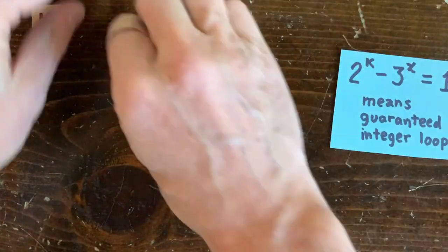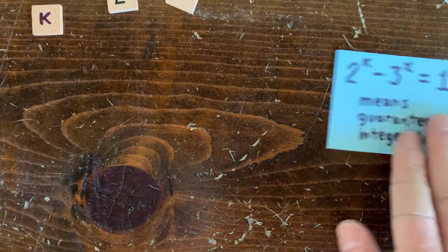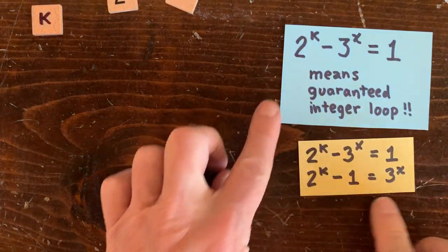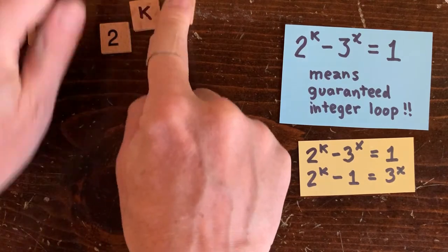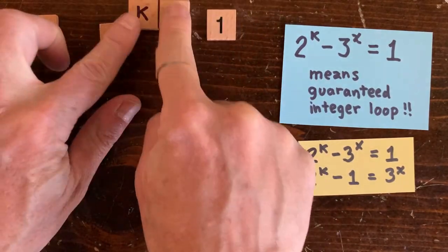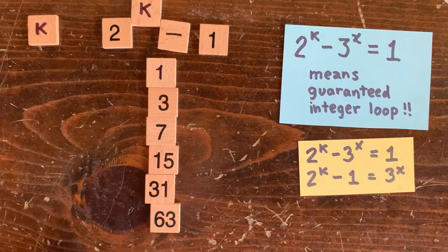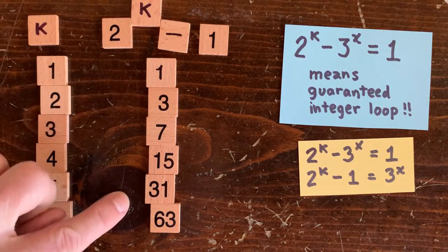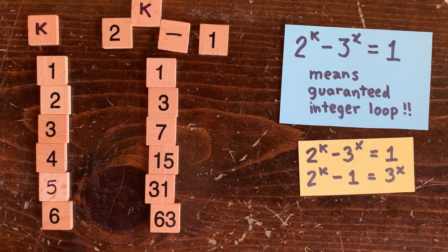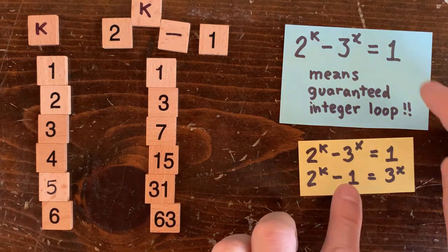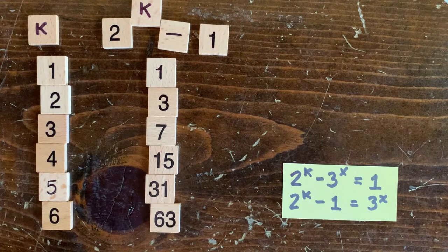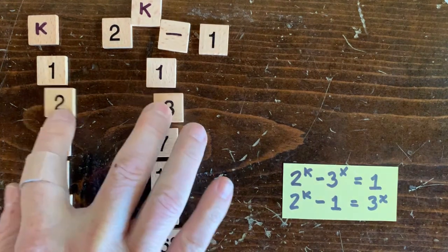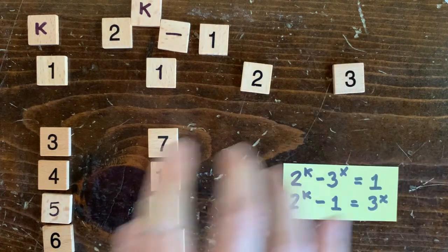So 2 to the k minus 3 to the x equals 1 means 2 to the k minus 1 equals 3 to the x, which implies 2 to the k minus 1 would have to be divisible by 3 and nothing else. So let's look at 2 to the k minus 1 for various values of k. You can see already that none of these are divisible by 3 and nothing else. And you can use a computer to check the first billion billion values of k and you get the same answer. But I would say, is it true for all values of k? Nobody knows. Just kidding. Gersonides knows.